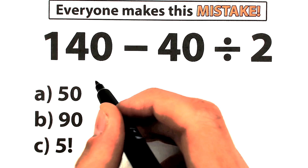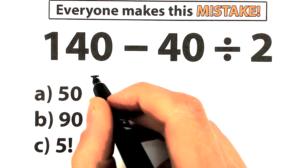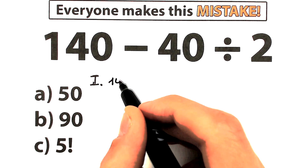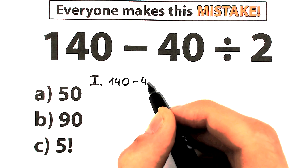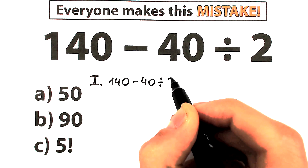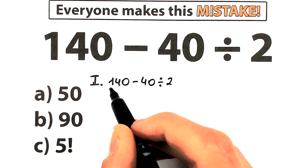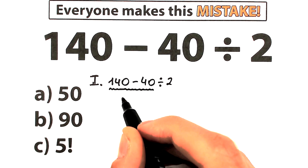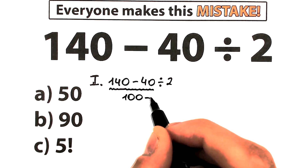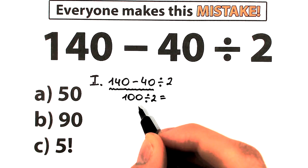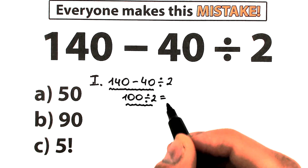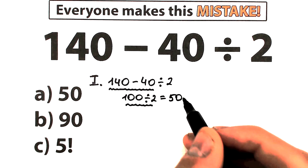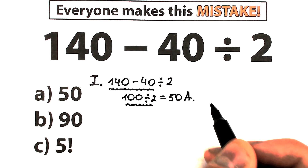There are two types of students. The first type don't know about order of operations — they solve this question absolutely randomly. So they look at 140 minus 40 divided by 2, subtract first: 140 minus 40 equals 100, then divide 100 by 2 and get 50. This is option A, and one part of students solve it that way.